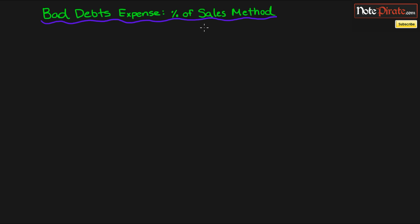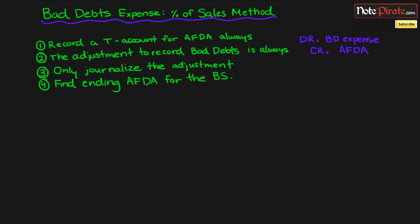The percentage of sales method is sometimes called the income statement approach, or the income statement method, because sales shows up on the income statement. Before we begin talking about the example and calculating Bad Debt Expense and writing out that adjustment, we'll go through some rules to give you a step-by-step plan to perform this percentage of sales method.